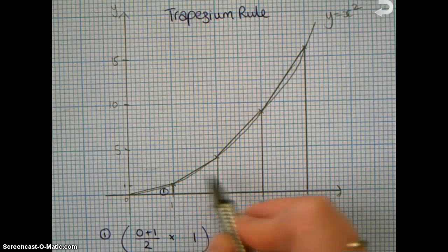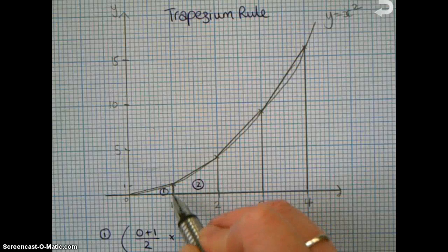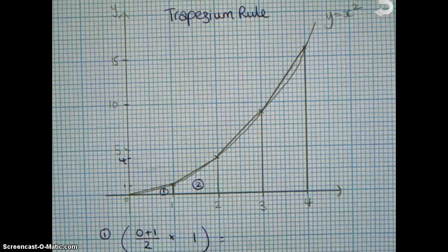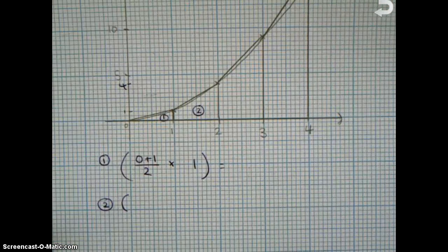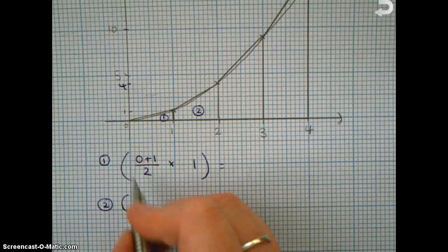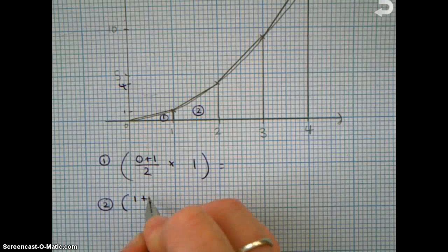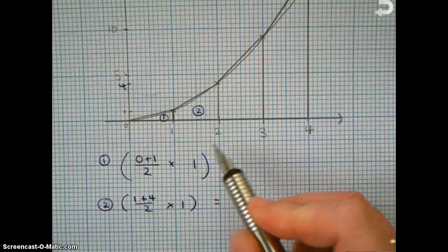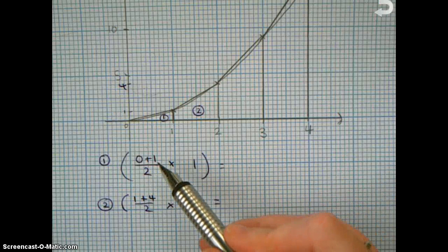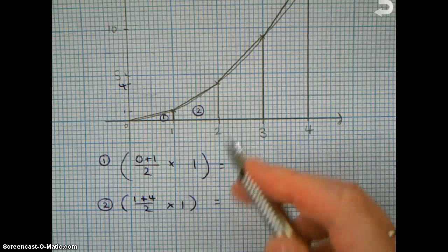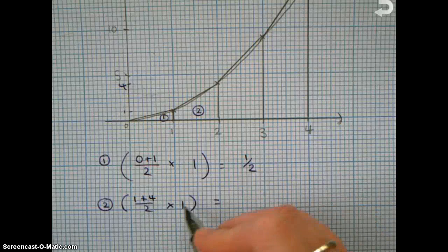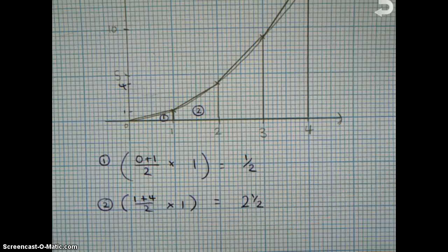Trapezium number 2, that's this one, well, that will be this side is 1. That height, 2 squared, that goes up as high as 4, doesn't it? So if we're working out our second trapezium, we're going to do 1 plus 4, divided by 2, times 1. So that's 0 plus 1 is 1, divided by 2 is 1 half, times 1 is 1 half. 1 plus 4 is 5, divided by 2 is 2 and a half, times 1 is still 2 and a half.